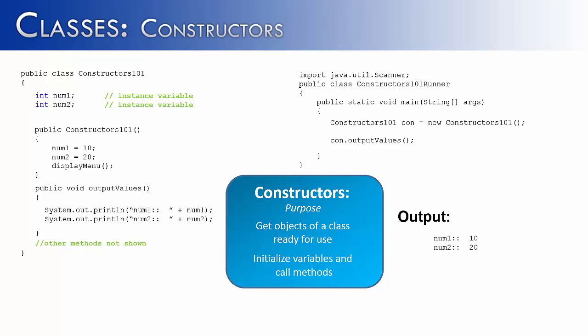Now let's talk about some flexibility that can be added into constructors. We can allow the user or another class to set the values of num1 and num2 through parameter variables, instead of having the Constructors101 class do it. We change that by saying num1 equals n1 and num2 equals n2. Over in the Runner class, we pass the values 10 and 20 into the constructor, which assigns them to num1 and num2, giving us the expected output of 10 and 20.